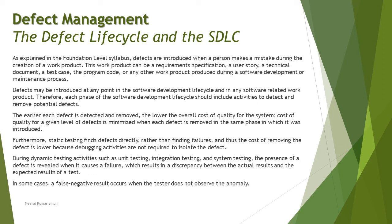In some cases a false negative result occurs when the tester does not observe the anomaly. A false negative is when you make a typographical error in mentioning the expected and actual result. For example, if the expected result was error 401 and when you executed you also got 401, but while typing the actual result you wrote 104 — since 104 is different from the expected you marked it as fail, but it was actually a typographical error. Such things are called false negatives.